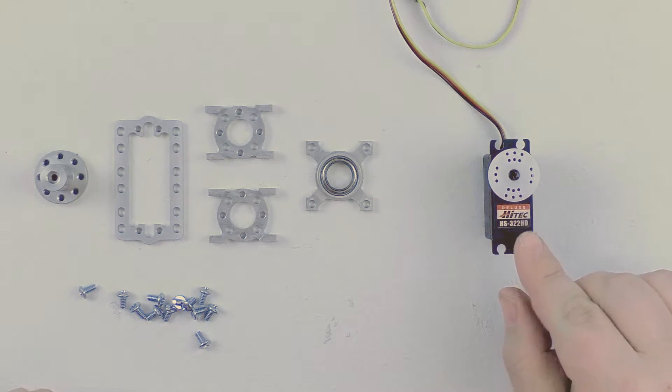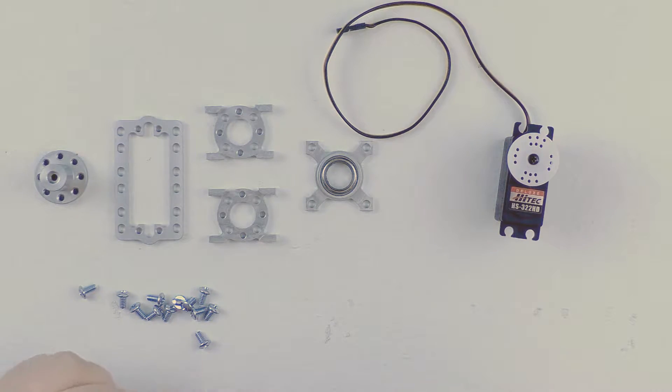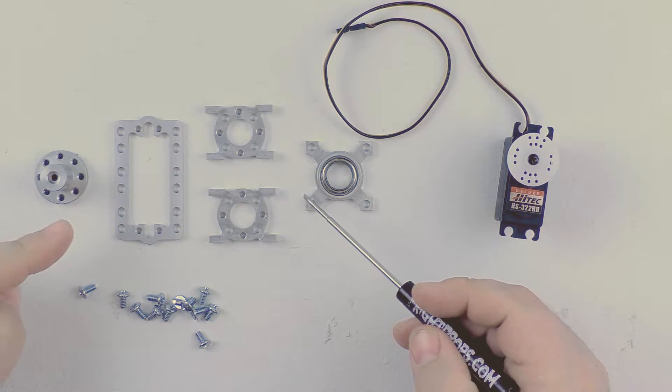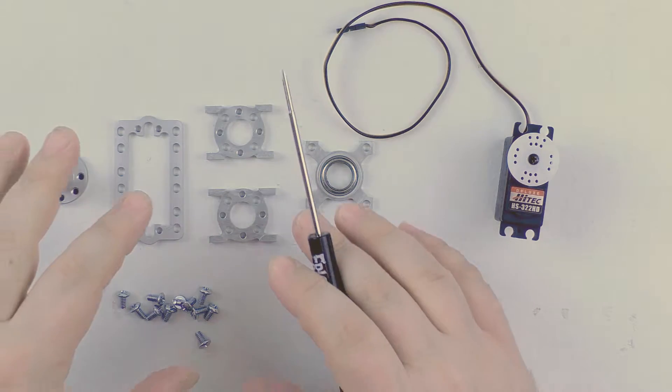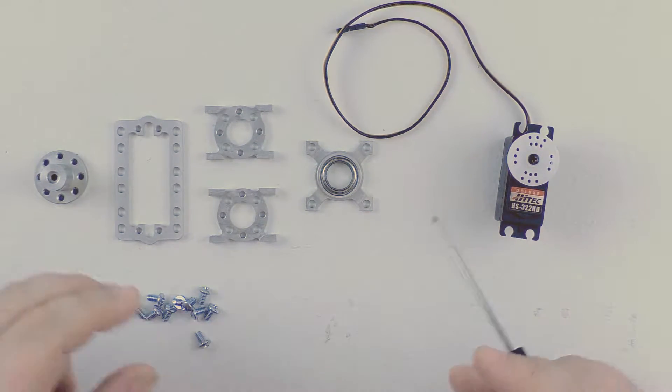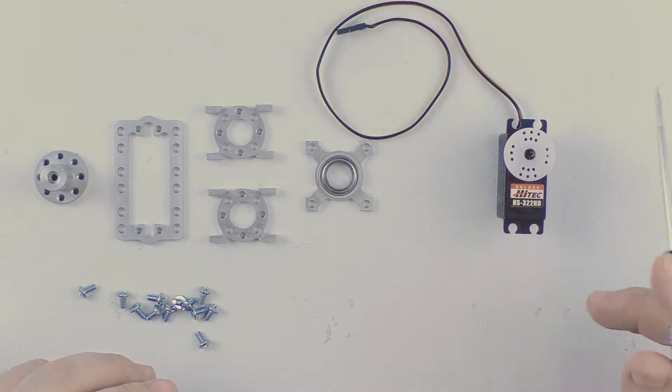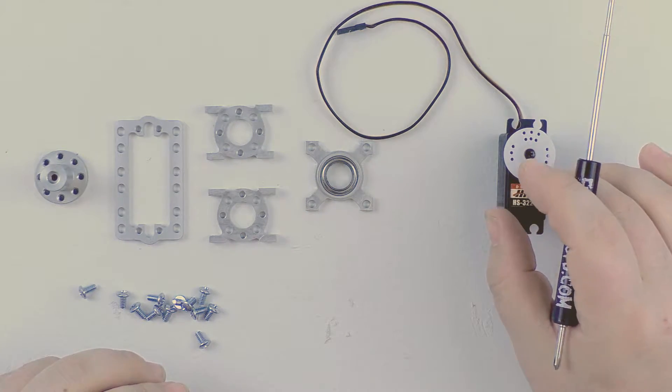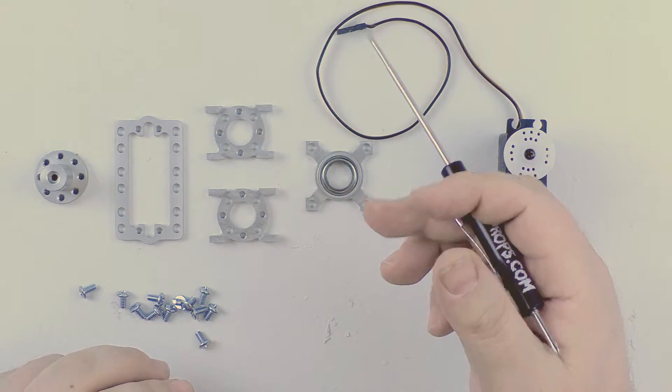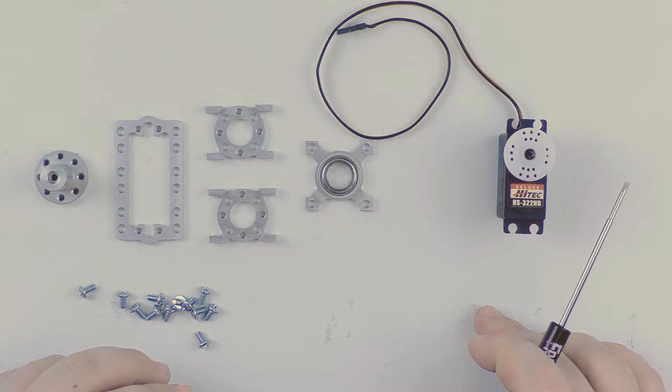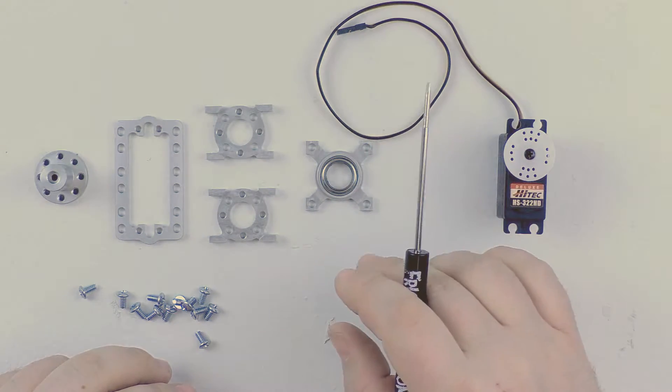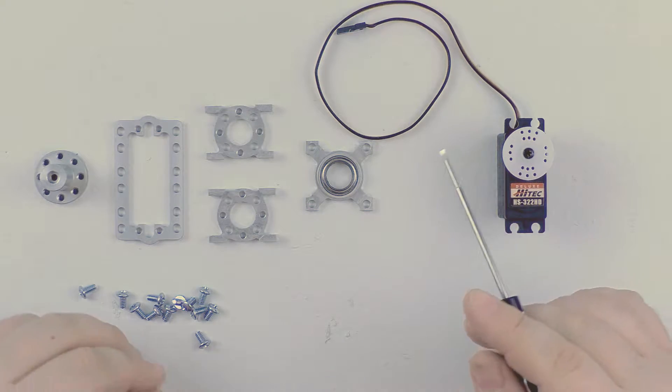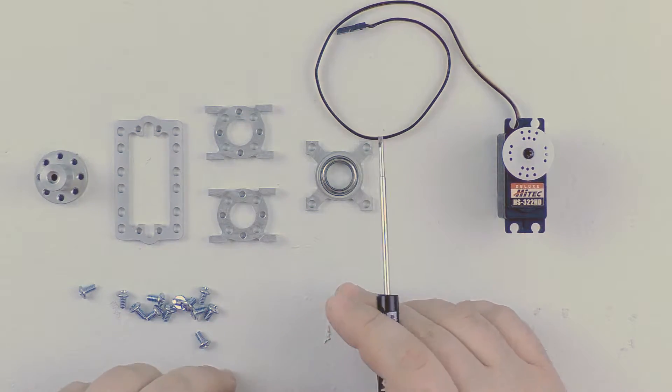We are going to start with a standard sized servo, which we have here. These are the parts for the servo block kit, and we are going to show you how to put these onto the servo. Using a servo block is a good way to enhance the performance of your servo. It basically takes a little bit of the load off of the servo gears themselves, allowing you to move a heavier load and protect the servo from damage. It also provides a lot of mounting options for the servo itself. We have a couple different options which we will get to once we get the main servo block assembled. Let's begin.